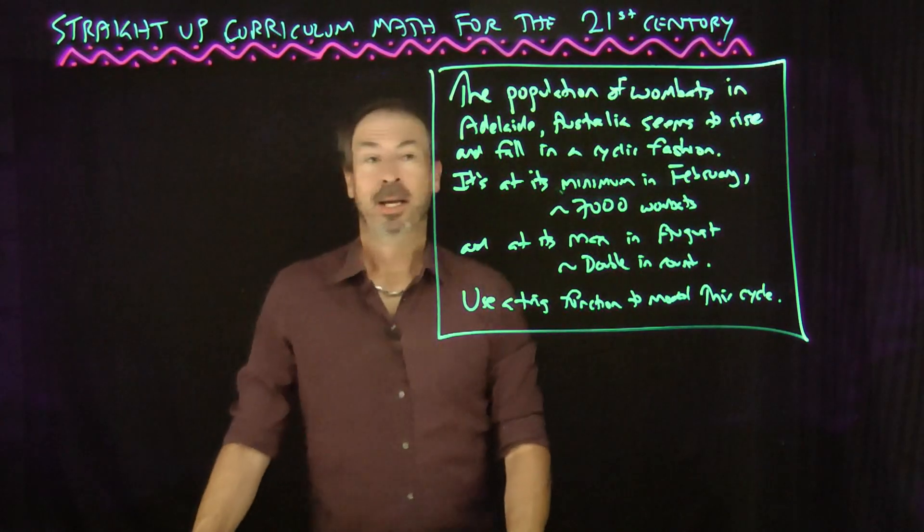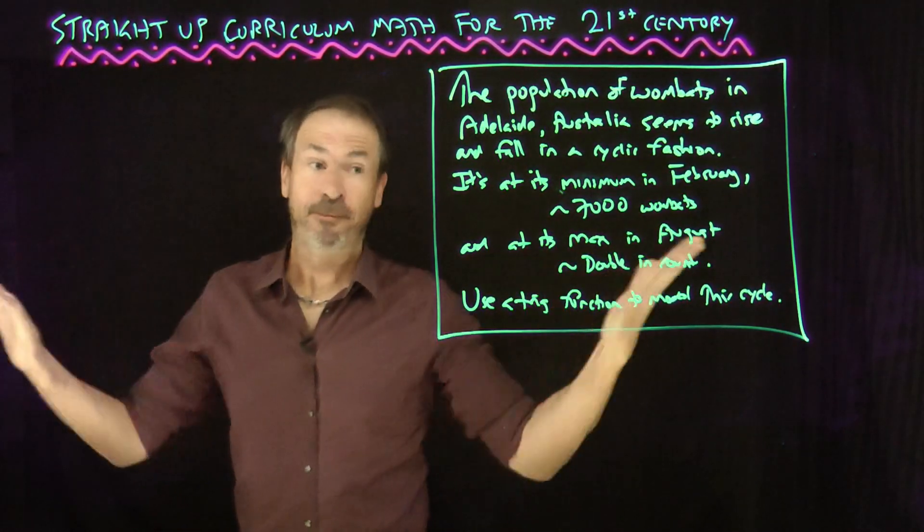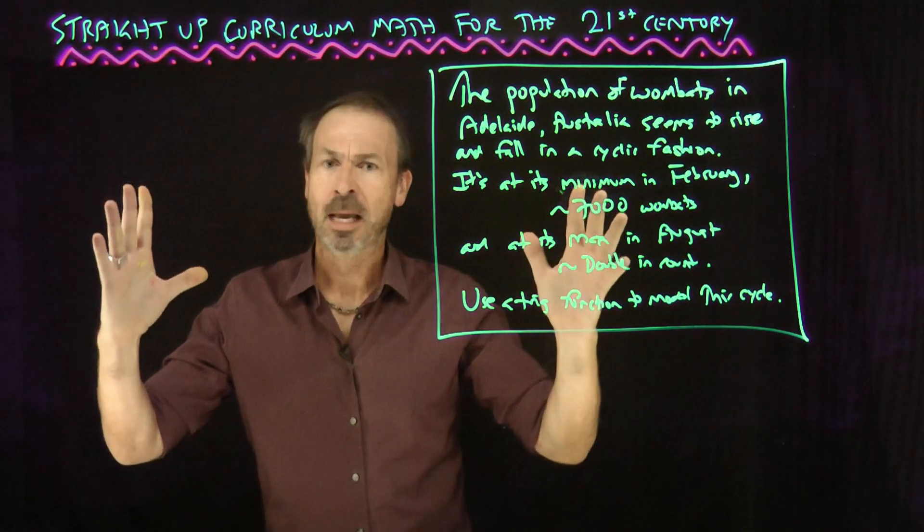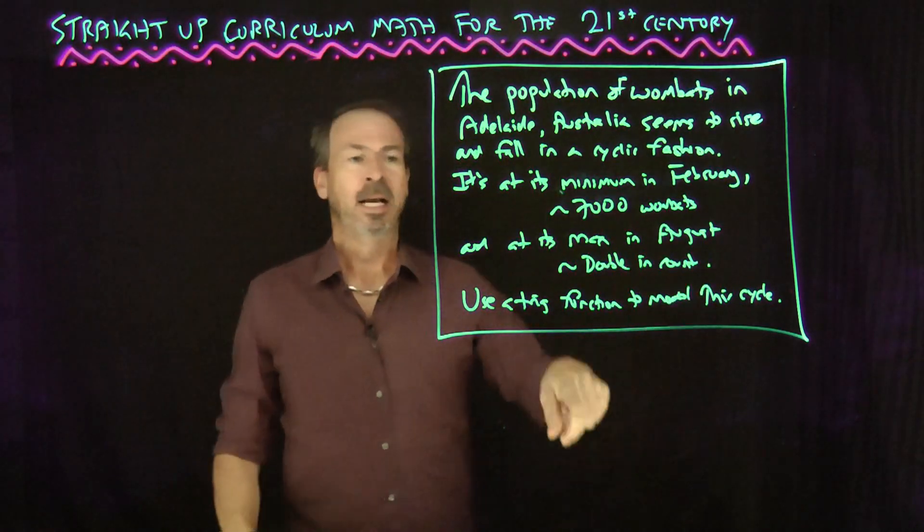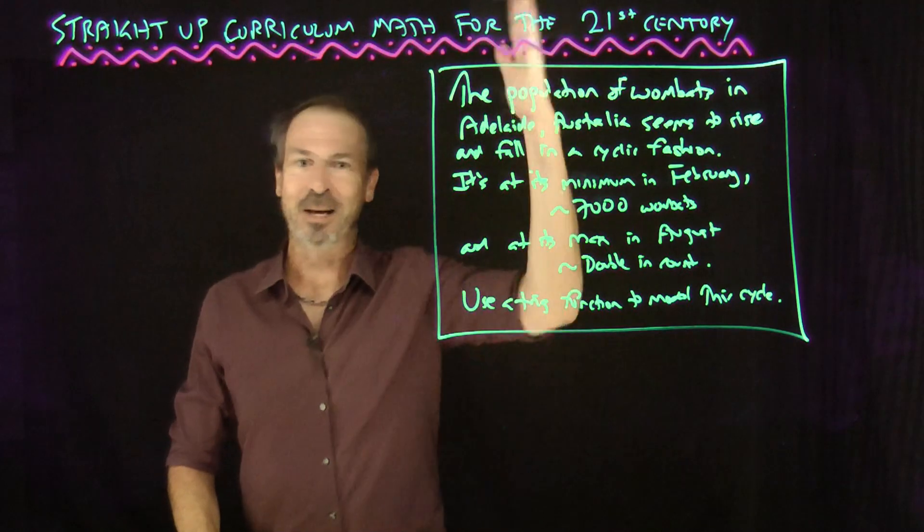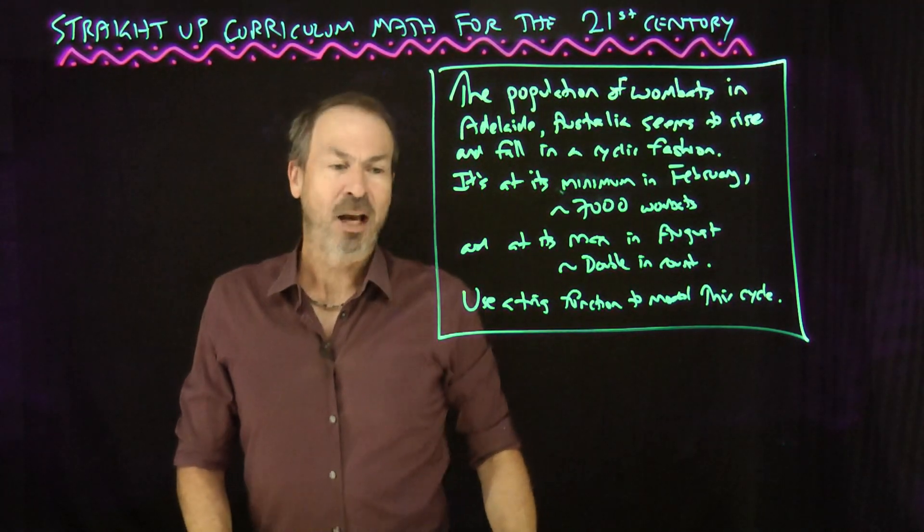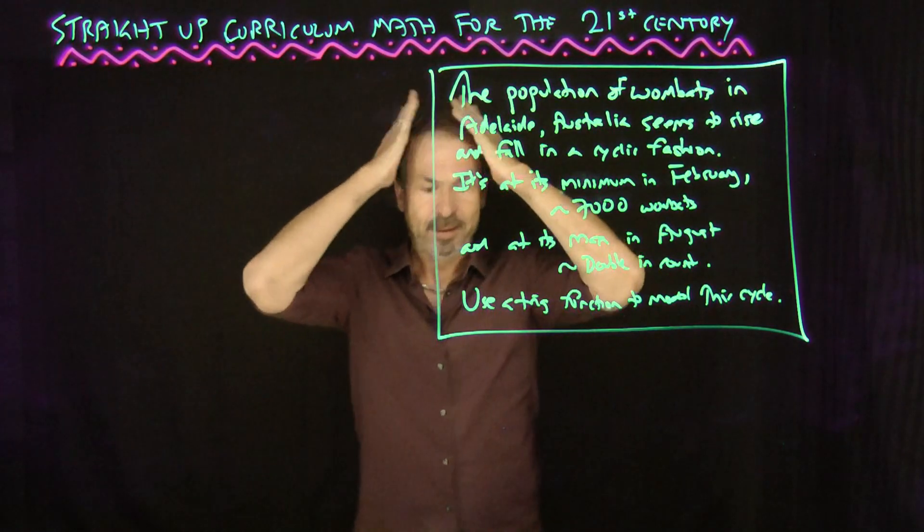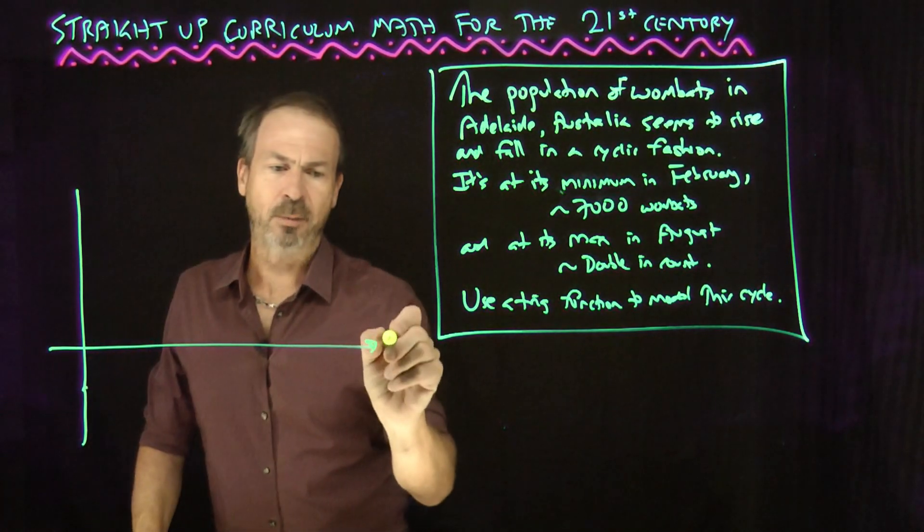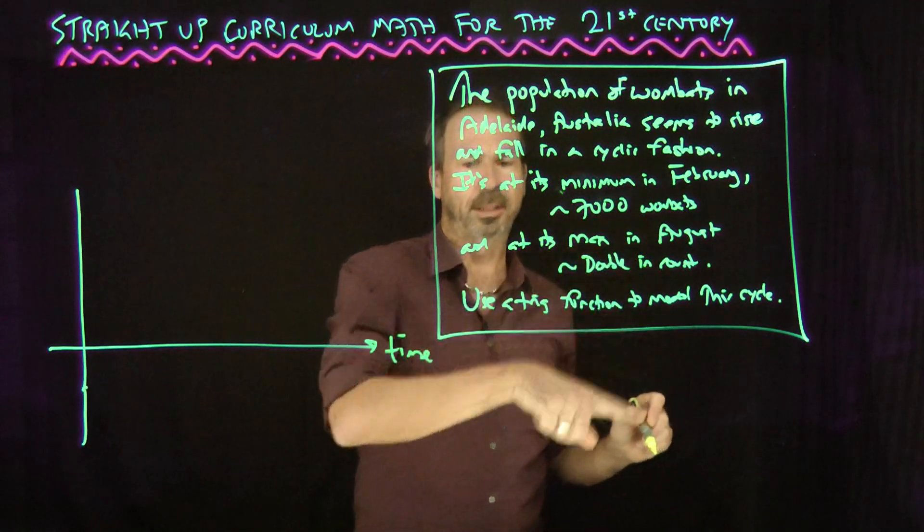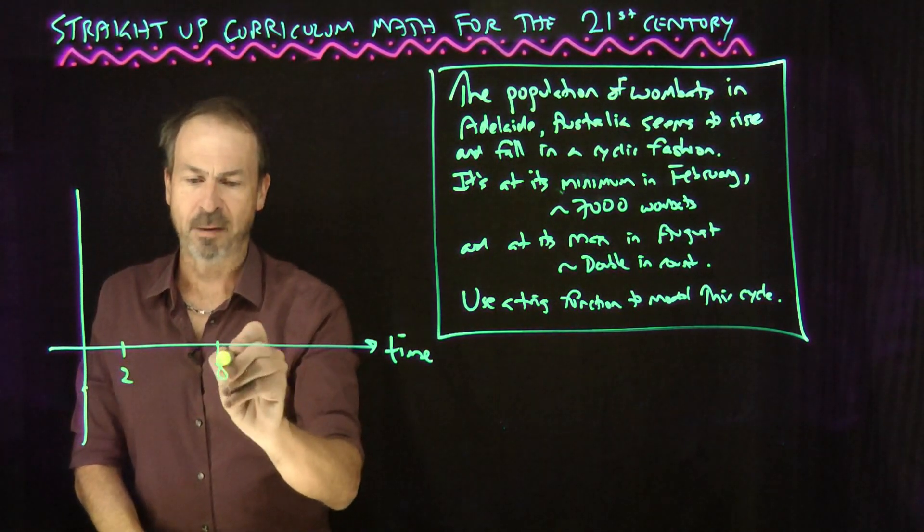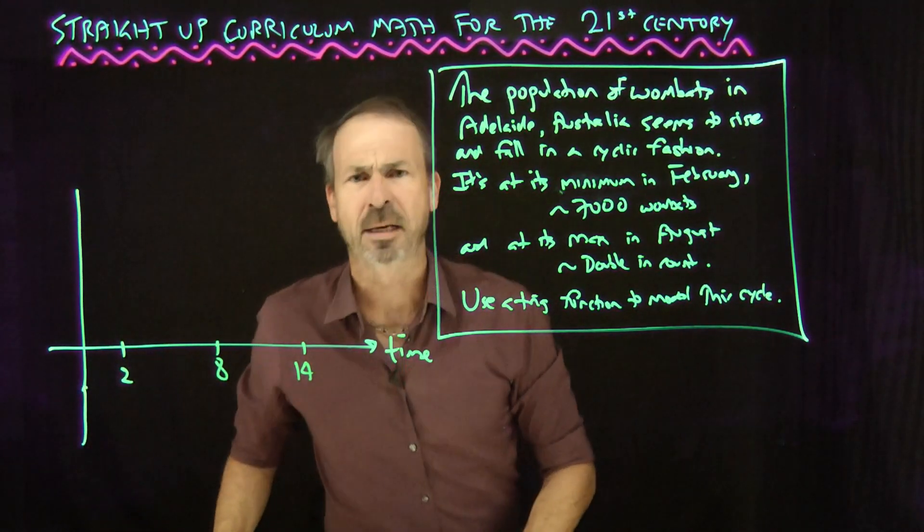Let me do an example that I'm going to make up, completely made up, of how to fit a trig function to some given data. The population of wombats in Adelaide, Australia, seems to rise and fall in a cyclic fashion. In the hottest month of February, it's at a minimum value, about 7,000 wombats. And then by the nice lush season of winter in August, the population doubles, about 14,000. So six months, it goes from 7,000 to 14,000.